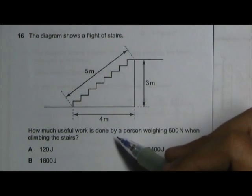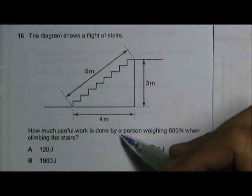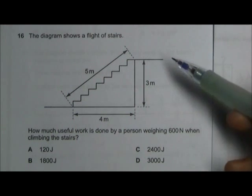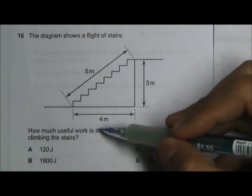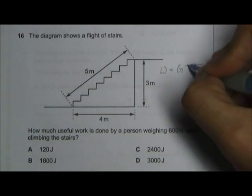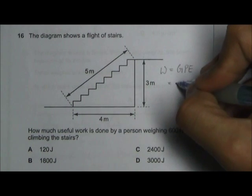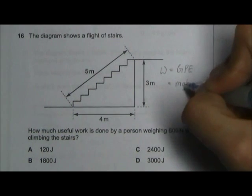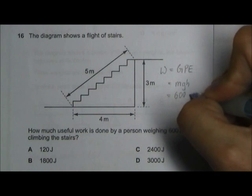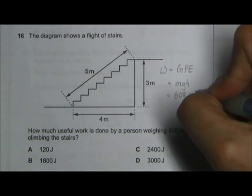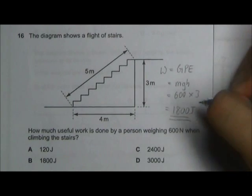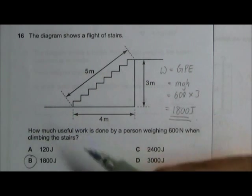The useful work is the work done to overcome gravity in order to bring the person to a higher ground. So the work done in this case is equivalent to calculating the increase in the gravitational potential energy of the person. We can use the formula mgh, and mg is your weight which is 600 newtons, multiplied by the height which is 3 meters. So we have 1800 joules of energy. Answer B.